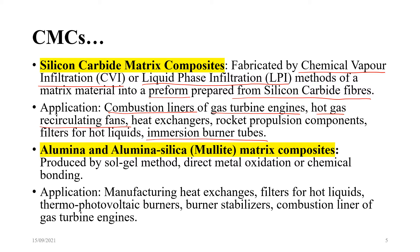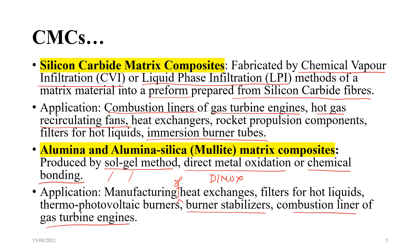Alumina and alumina-silica — also called mullite matrix composites — are produced by the sol-gel method (solution gelation method), direct metal oxidation (DEMOX), or chemical bonding. Applications include manufacturing of heat exchangers, filters for hot liquids, thermophotovoltaic burners, burner stabilizers, and combustion liners of gas turbine engines.